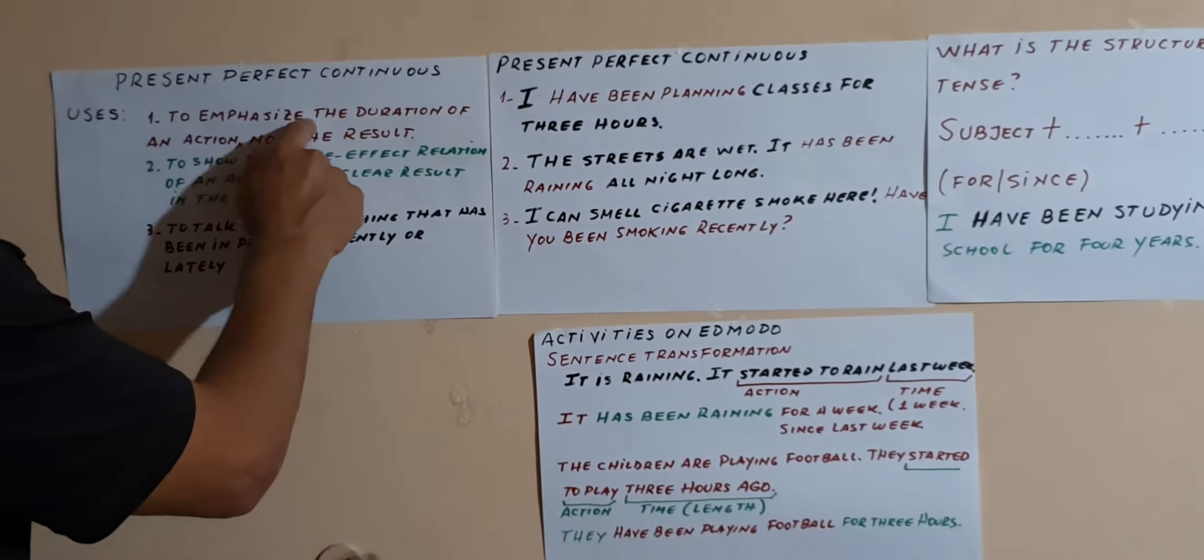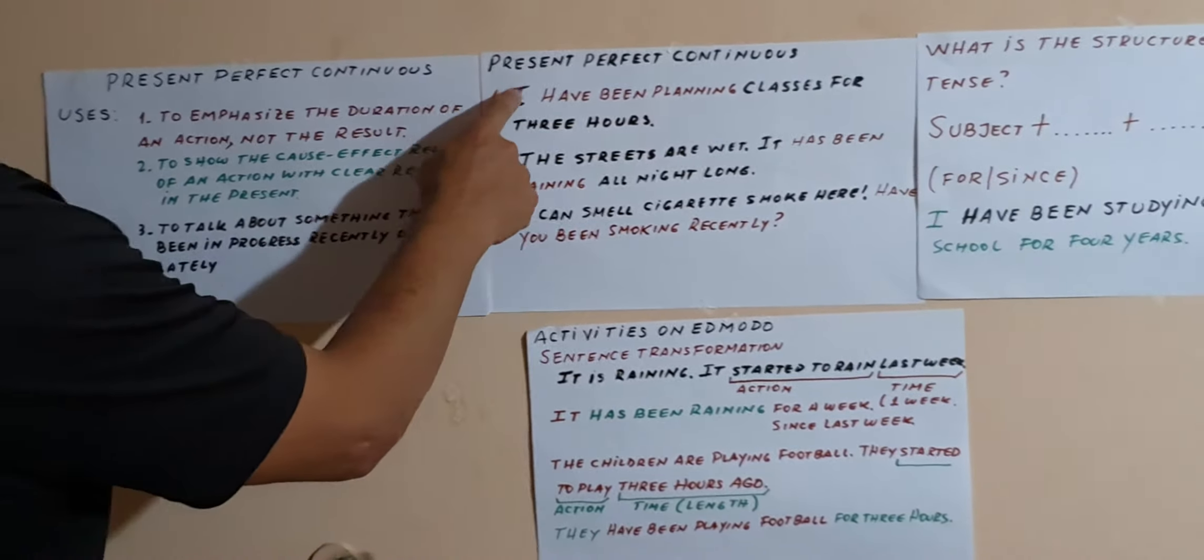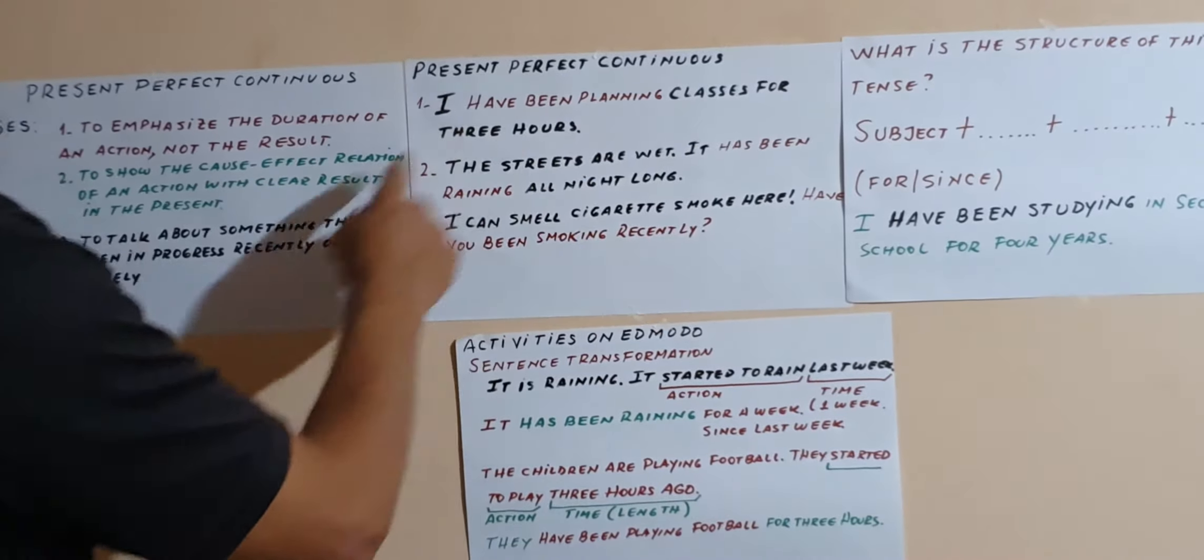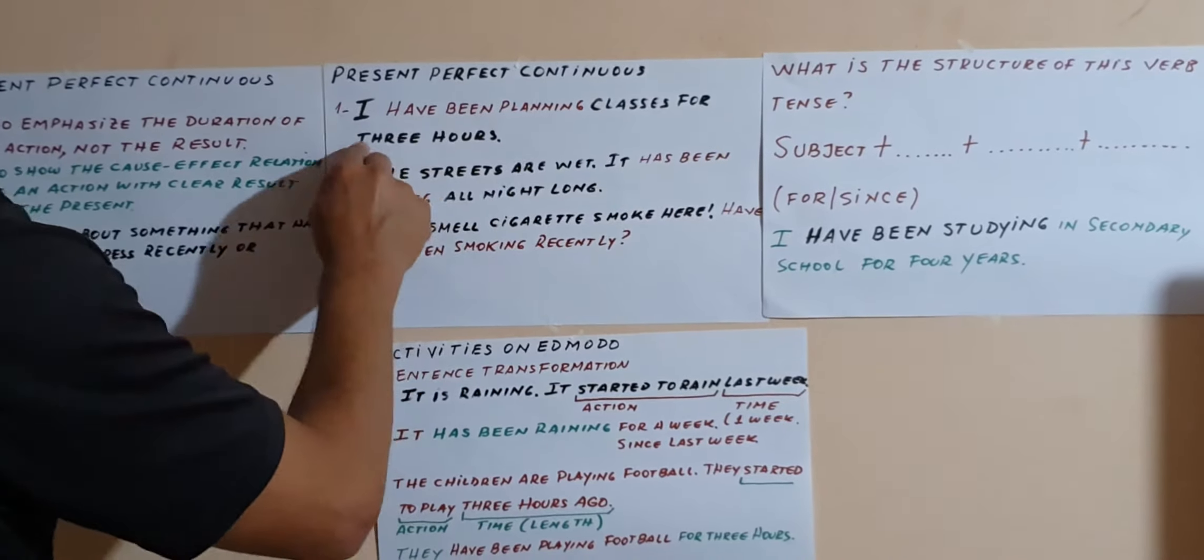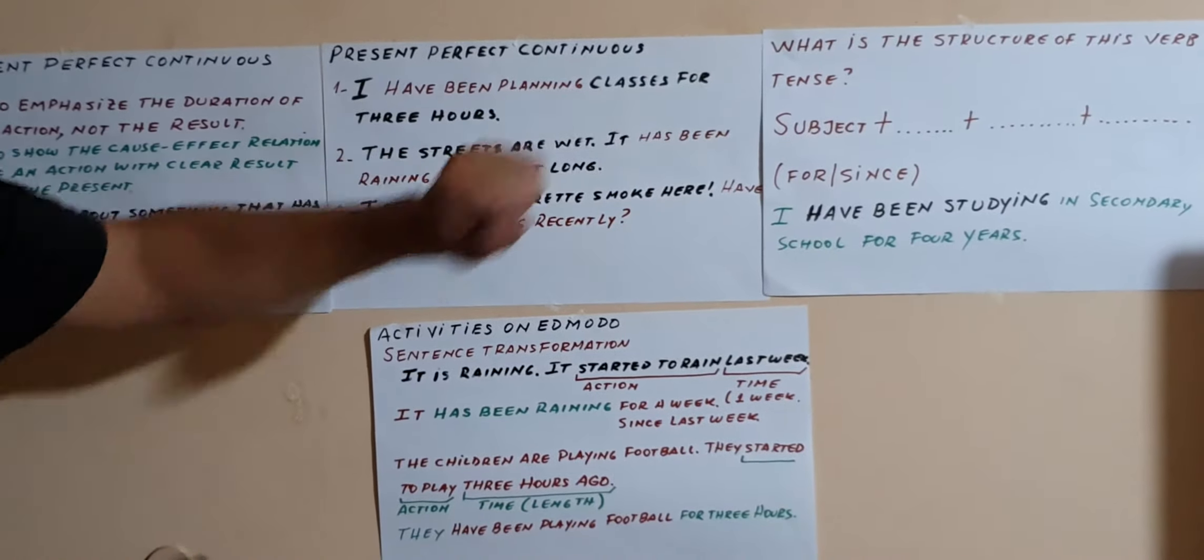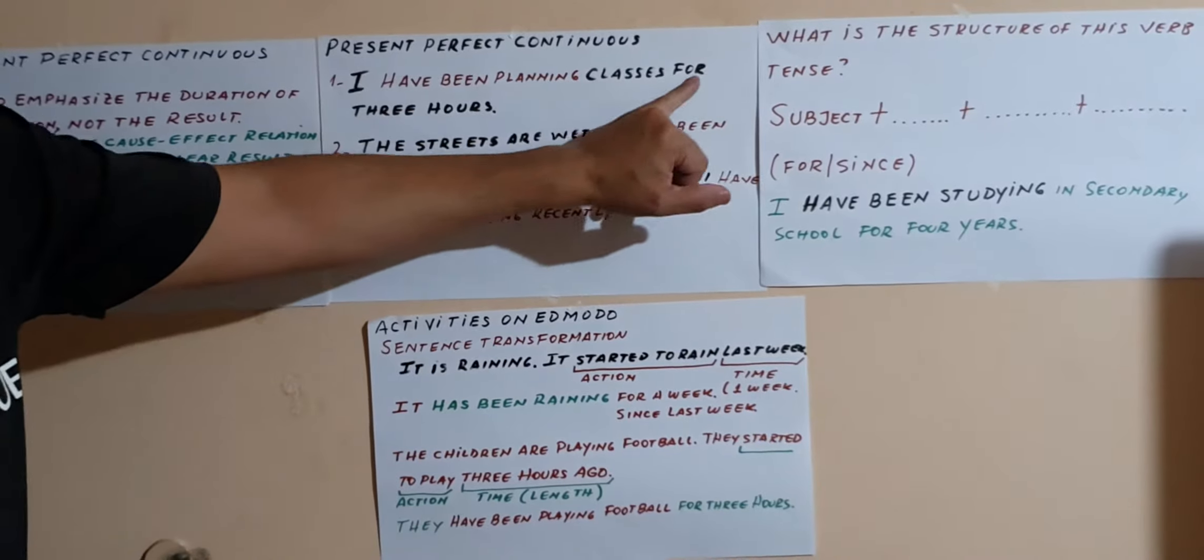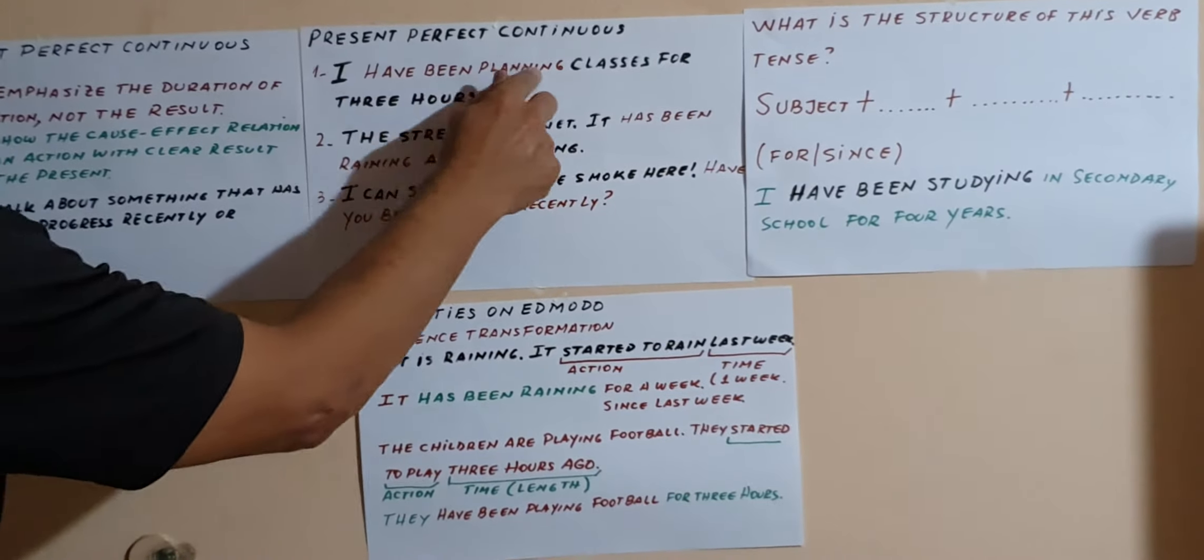Let's see, these are the examples of the different uses. Use number one: to emphasize the duration of an action, not the result. I have been planning classes for three hours. So I want to emphasize that I have been working for three hours. No estoy diciendo cuántas clases planifique, pero si el tiempo que me llevó.